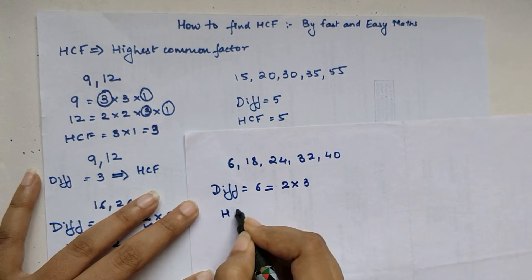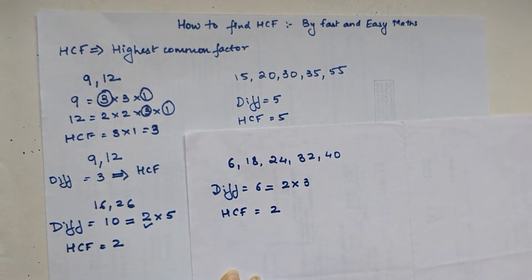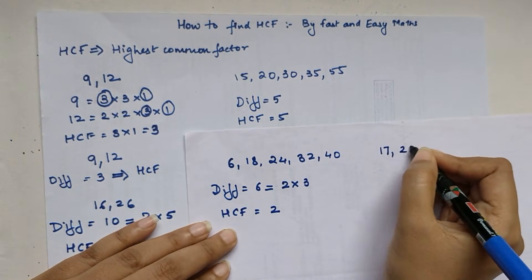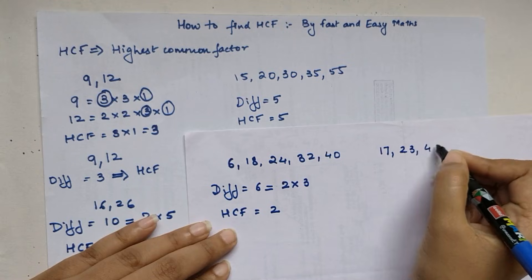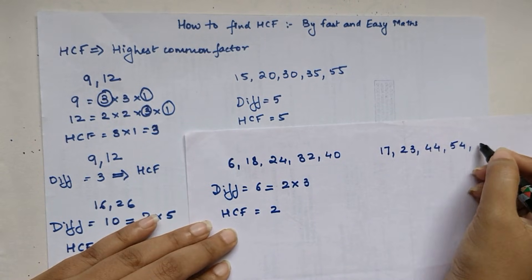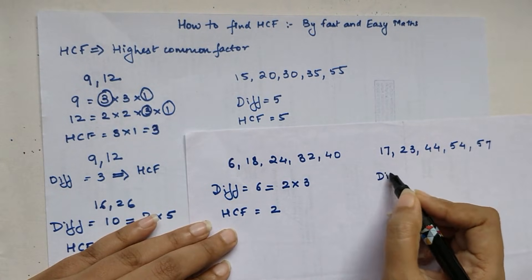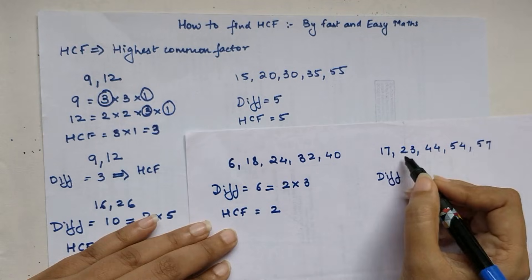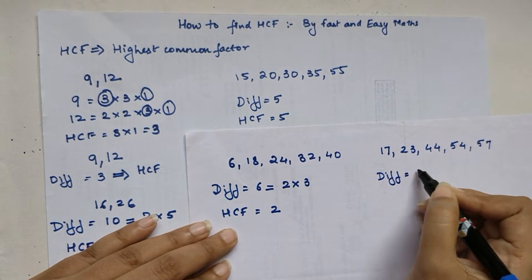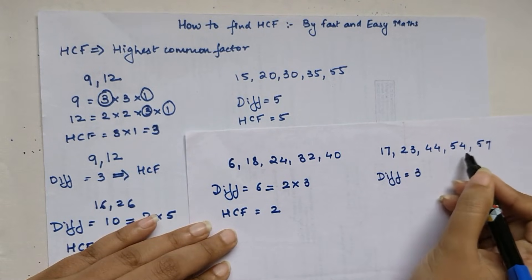Now let me show another example: 17, 23, 44, 54, and 57. Let us first find the differences — the least difference between all of these given numbers is 3. So now let us check whether 3 is a factor of all of these numbers.